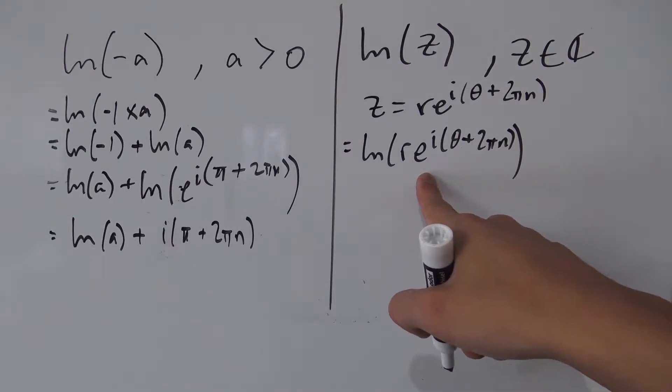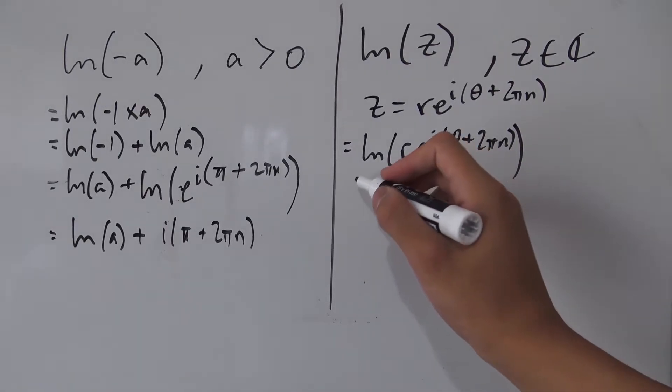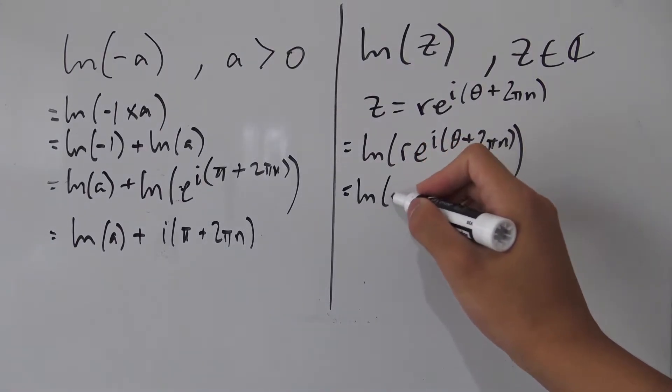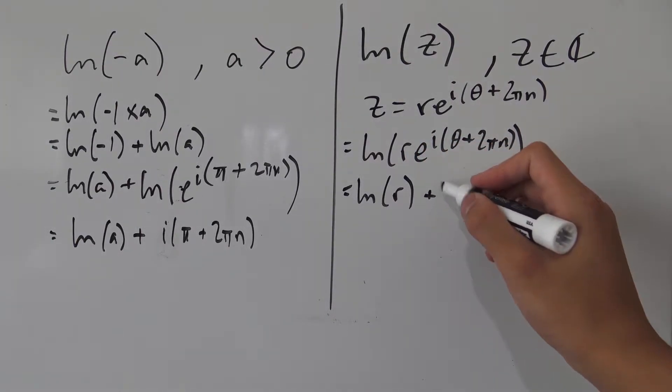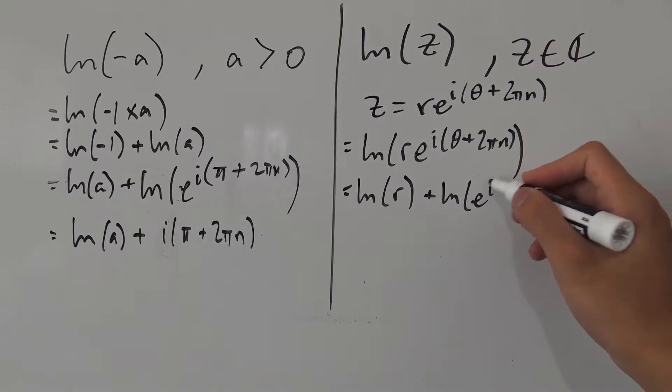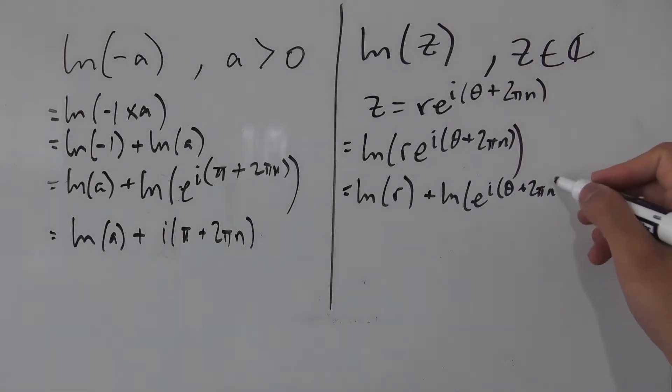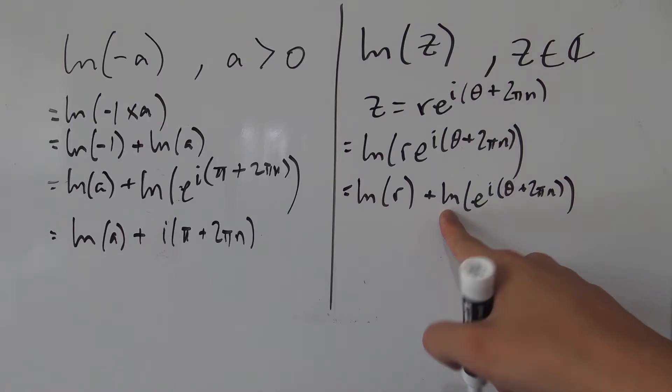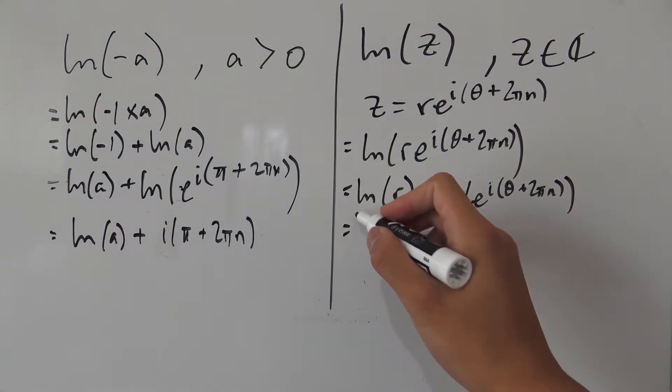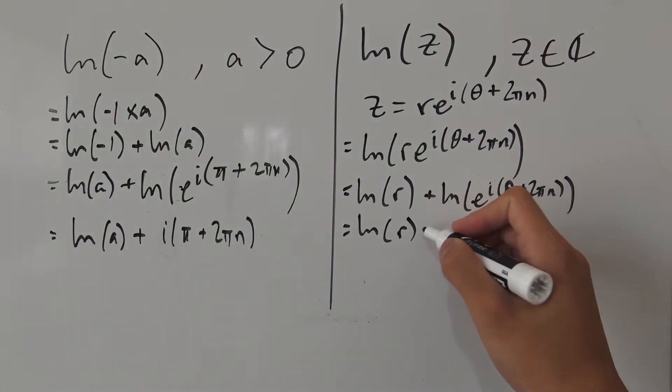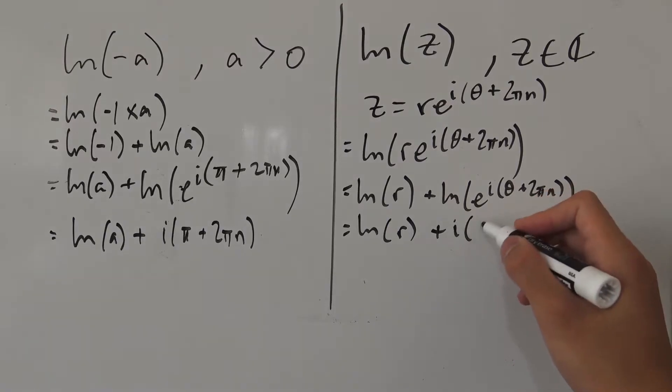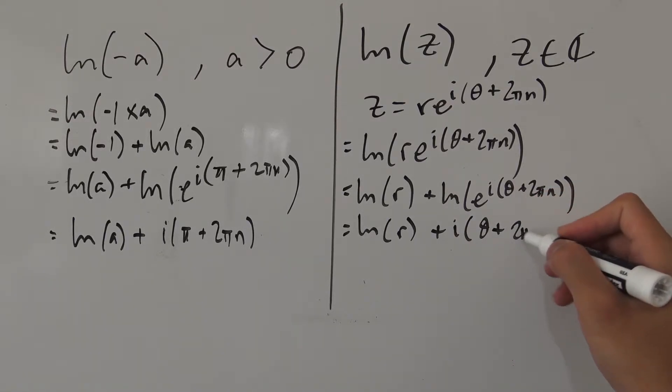So this is the natural log of r e to the i times theta plus 2 pi n. And like before we can split this natural log up into the sum of natural logs. So natural log of r plus natural log of e to the i theta plus 2 pi n. And natural log and e will cancel.